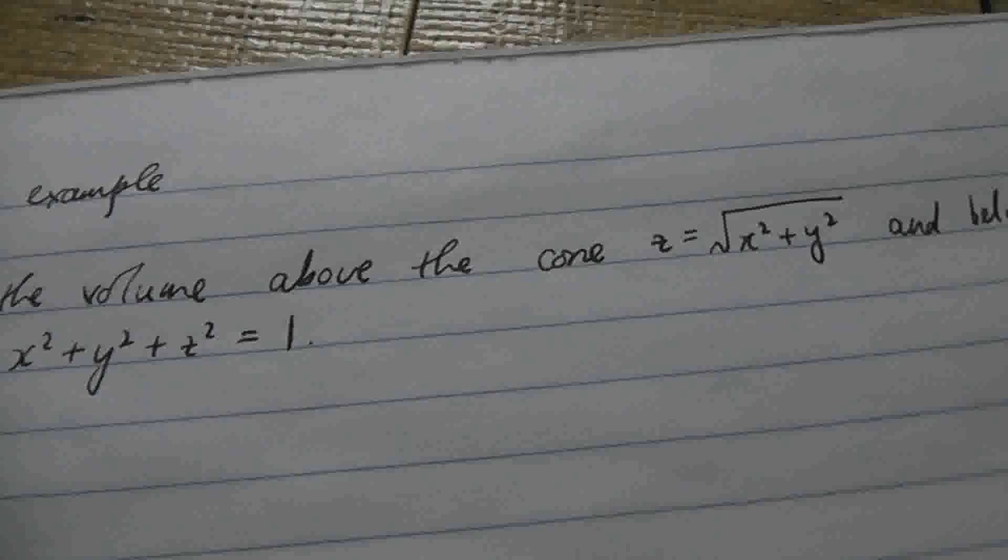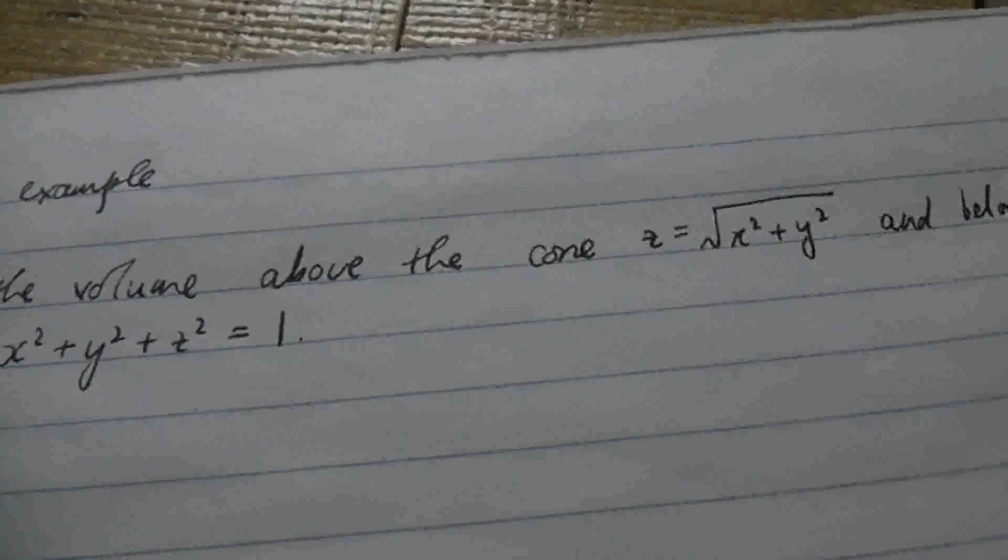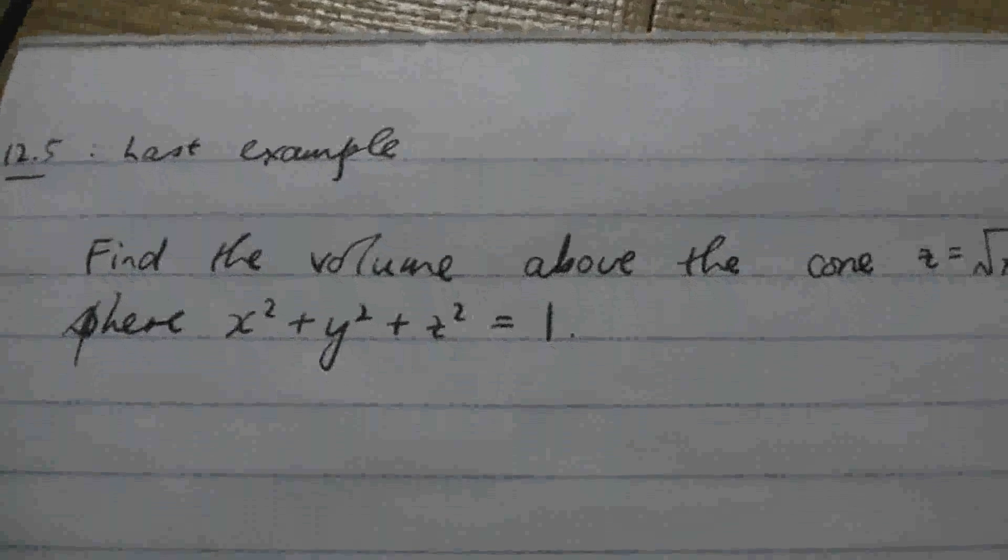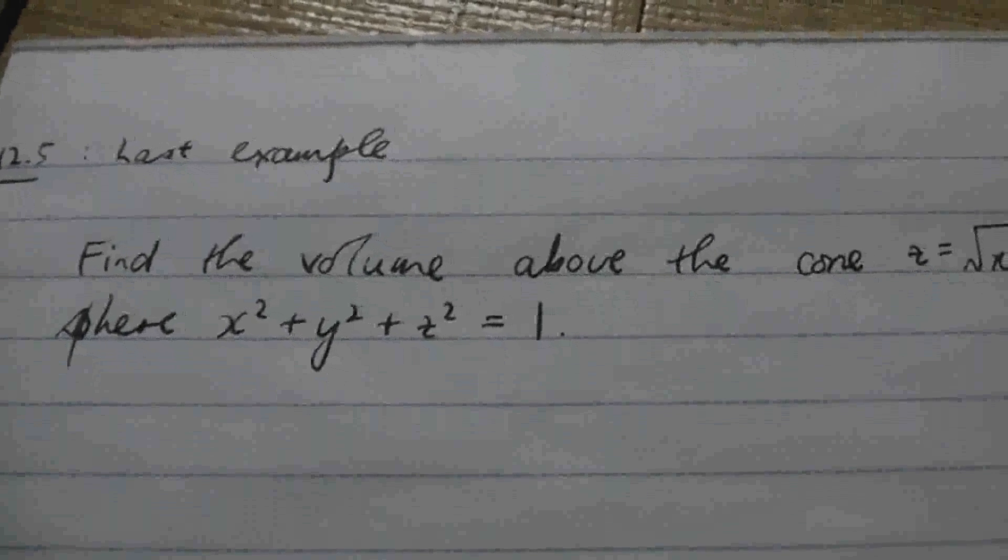So there's one more example I'd like to do from 12.5. It's the following: Find the volume above the cone z equals the square root of x squared plus y squared and below the sphere x squared plus y squared plus z squared equals 1.